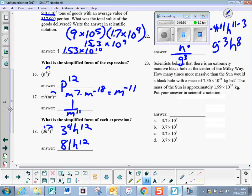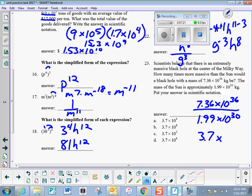Number 23, scientists believe there's an extremely large, massive black hole at the center of the Milky Way. How many times more massive than the sun would a black hole be? So I need to take the larger one because it's how many times greater and divide by the smaller one. And what do I get when I go 7.36 divided by 1.99? 3.7. And when I divide things with the same base, I subtract exponents. So, D.